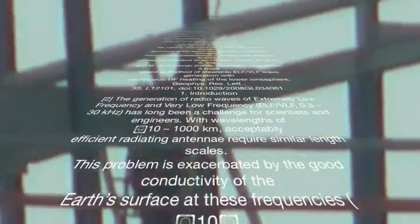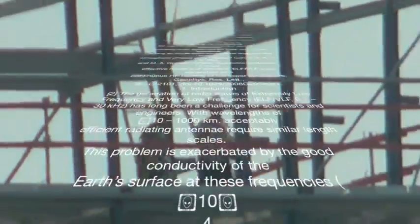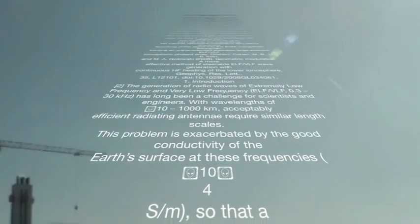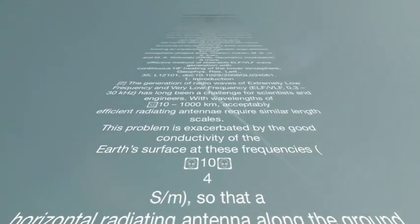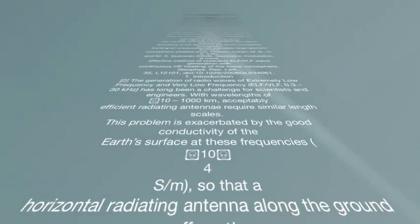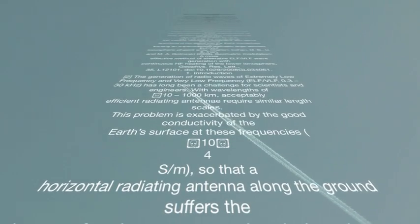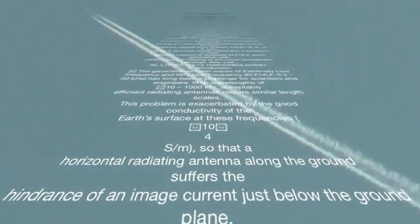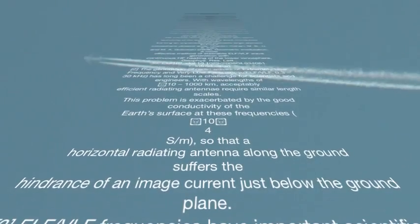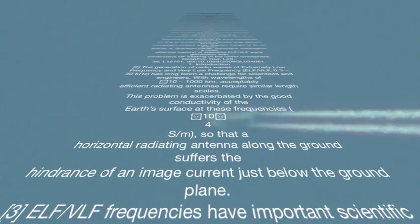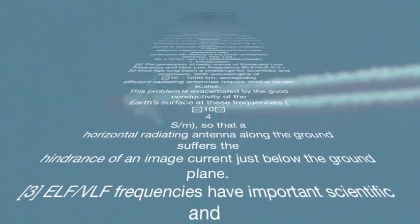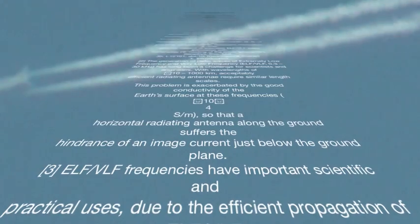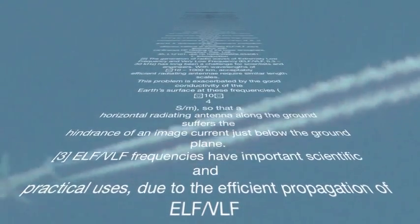The HIPAS facility near Fairbanks, Alaska utilizes a 150 kW transmitter array operating at 2.85 MHz (e.g., Villasenor et al., 1996). The 1 NW radiated EISCAT facility near Tromsø, Norway has performed ELF/VLF experiments (e.g., Stubbe et al., 1982), including HF beam steering ability utilized by Rietveld et al., 1984, to observe electrojet spatial structure.